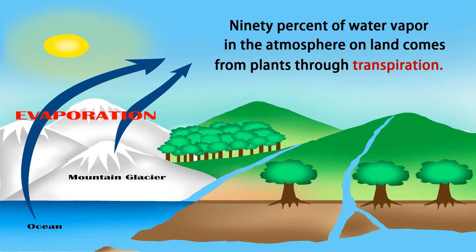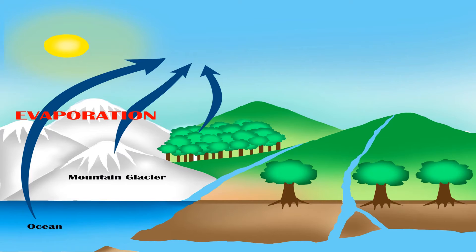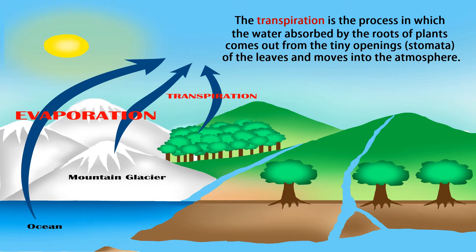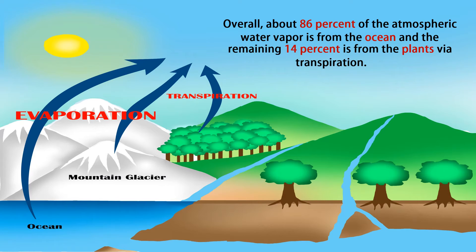Transpiration: 90% of water vapor in the atmosphere from land comes from plants through transpiration. Transpiration is the process in which the water absorbed by the roots of plants comes out from the tiny openings called stomata of the leaves and moves into the atmosphere. Overall, about 86% of atmospheric water vapor is from the ocean and the remaining 14% is from plants via transpiration.